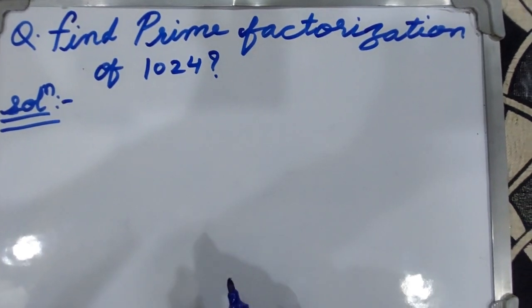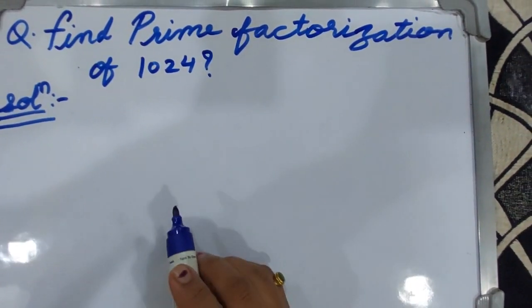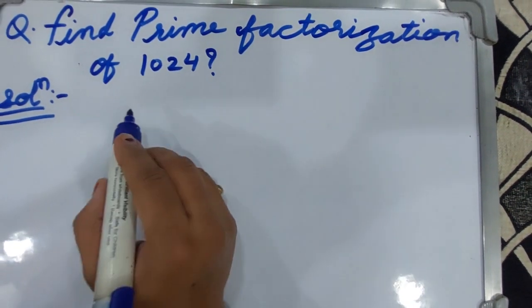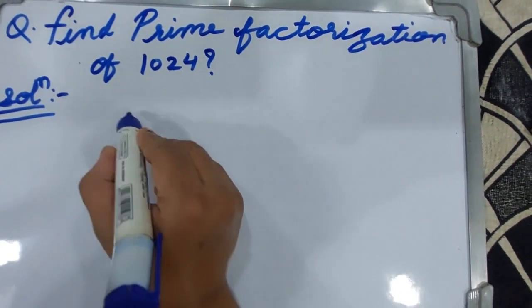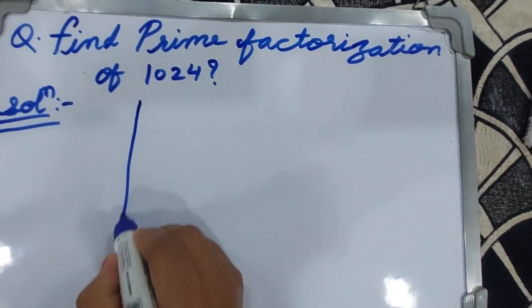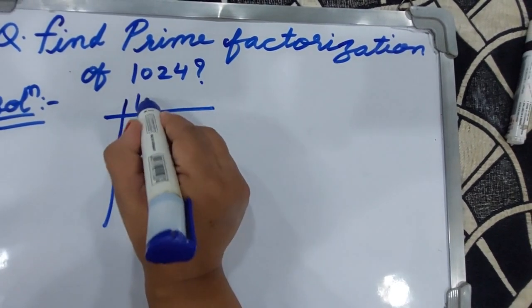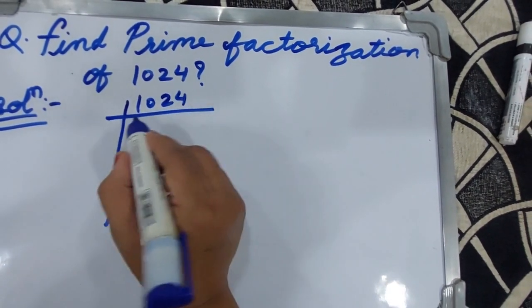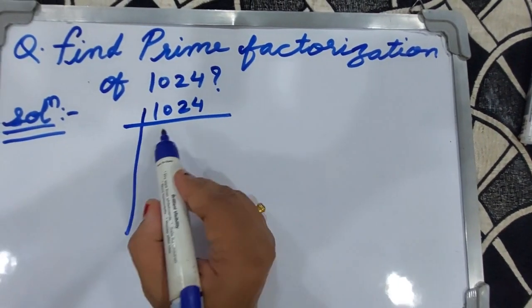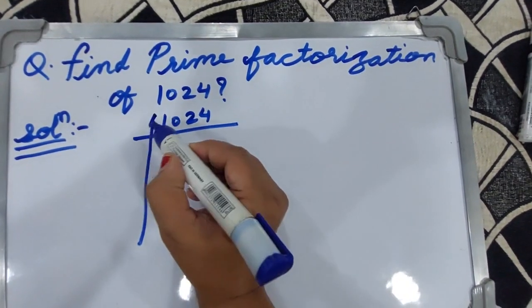Hello everyone, welcome to my YouTube channel. Today we solve the question: find prime factorization of 1024. Then how can we solve it? First we can write the number 1024 and we can find the prime factorization.